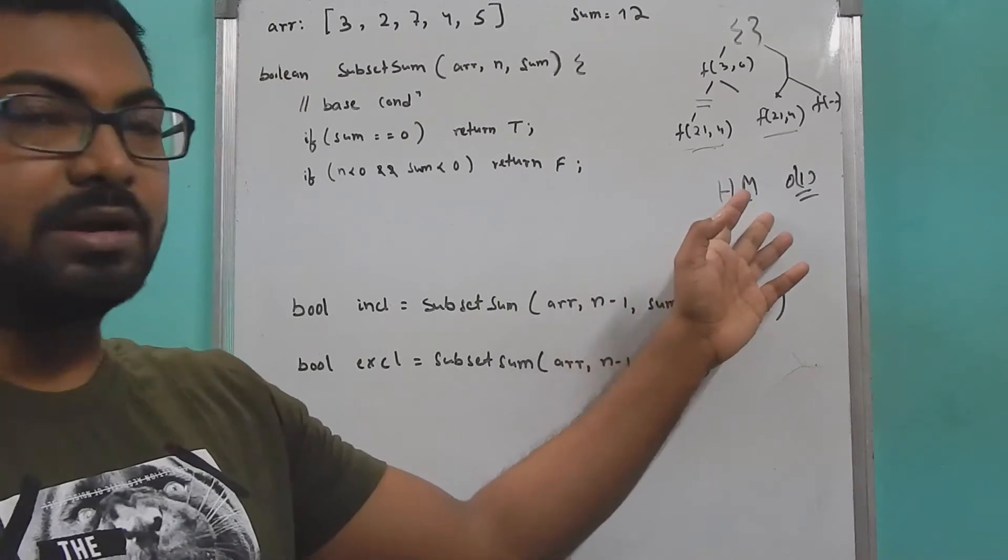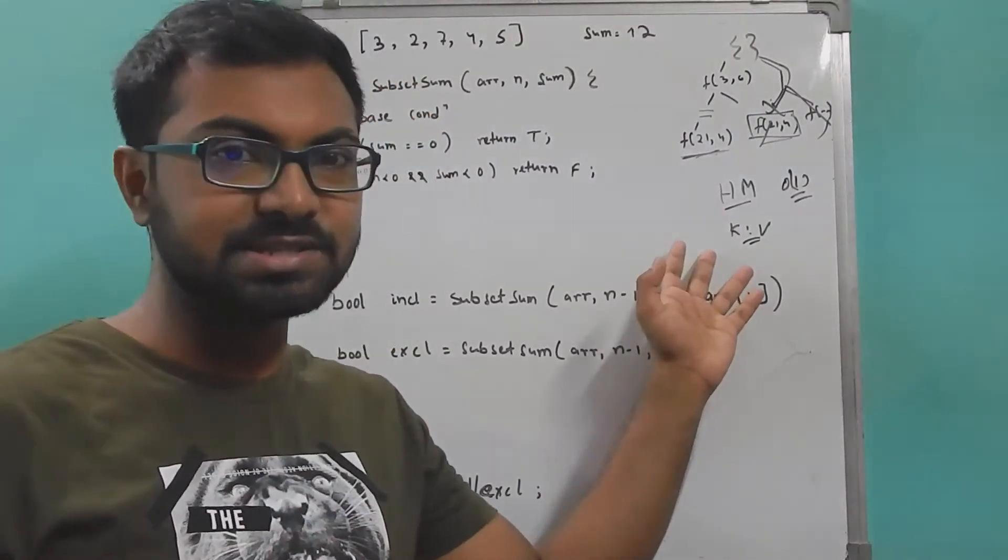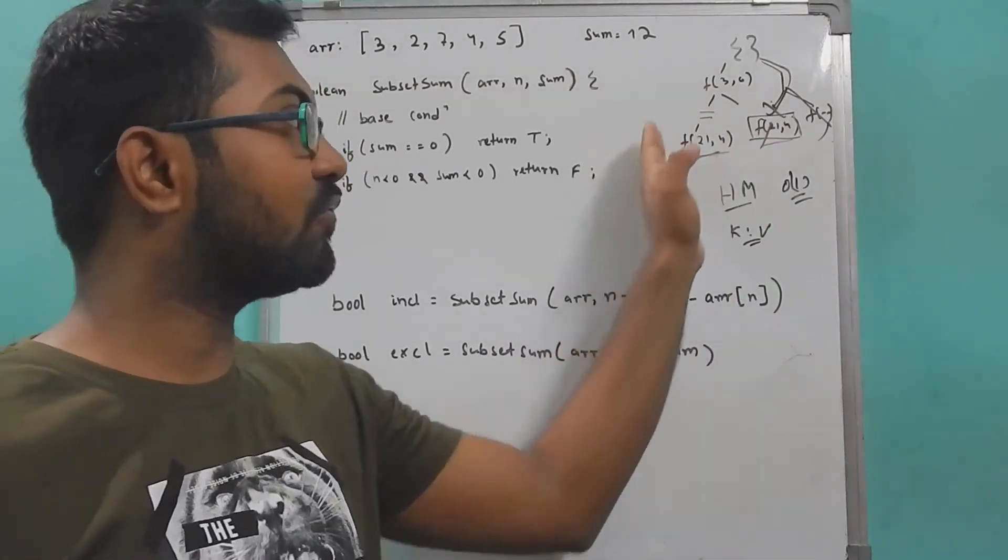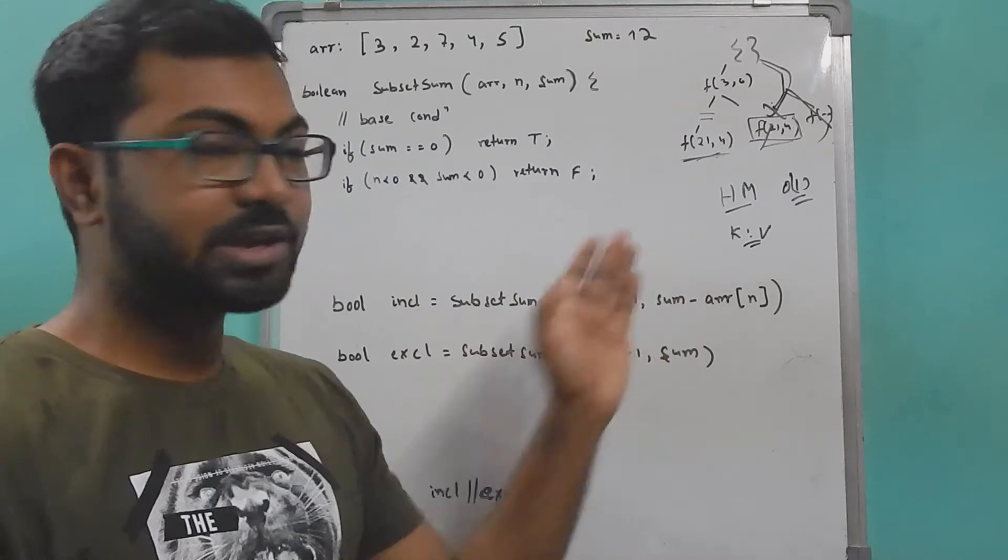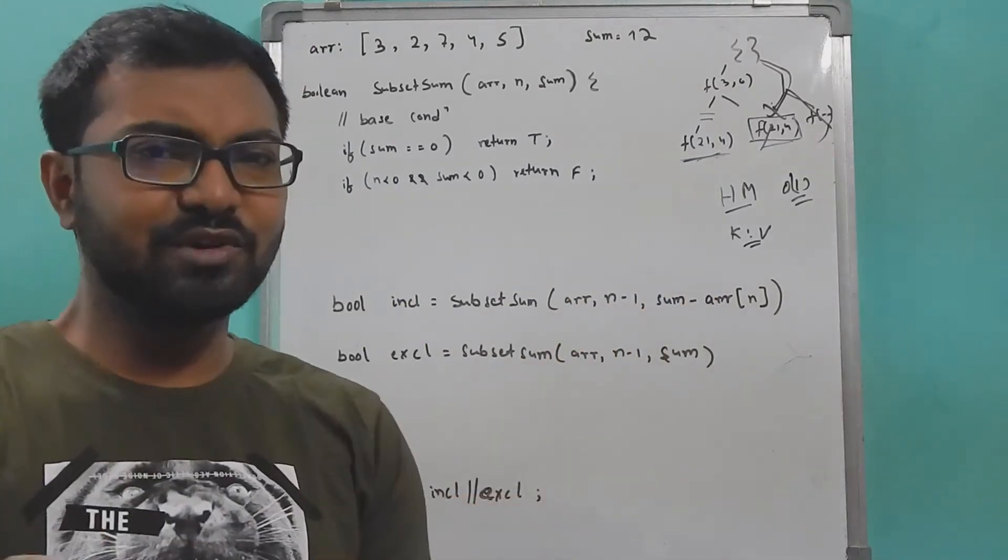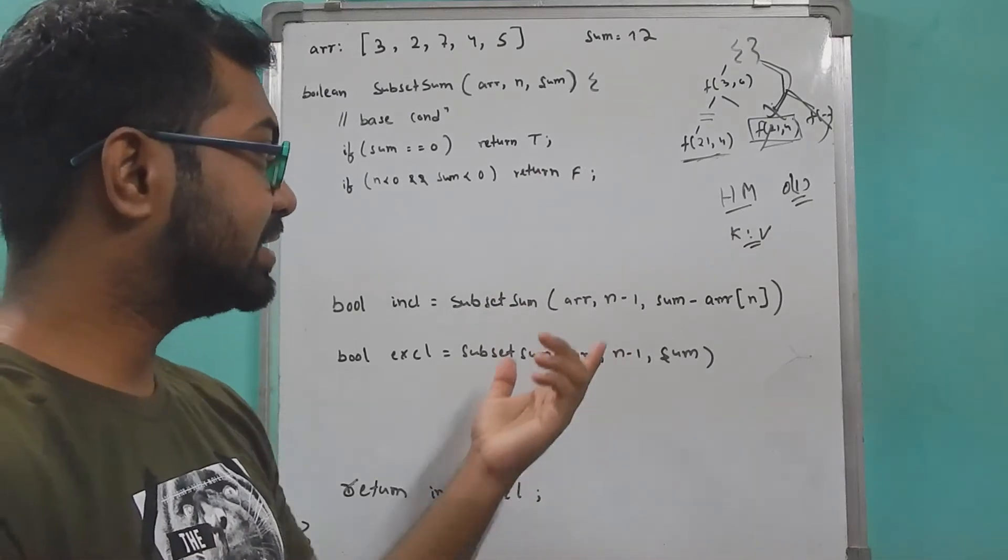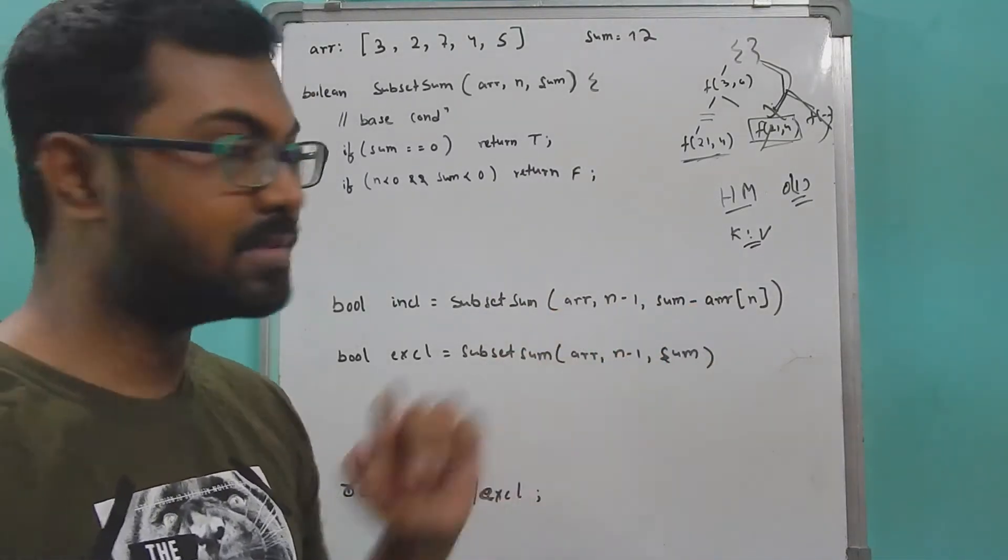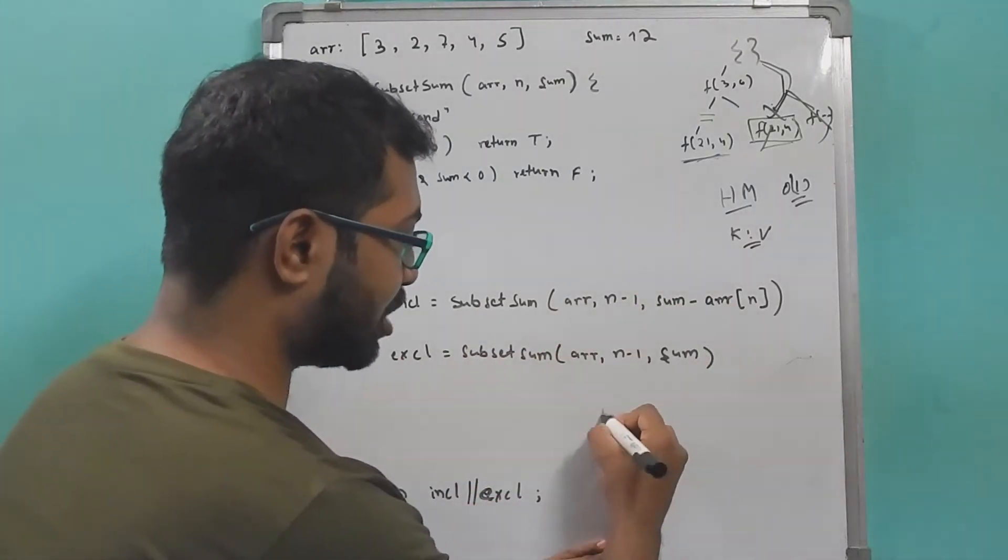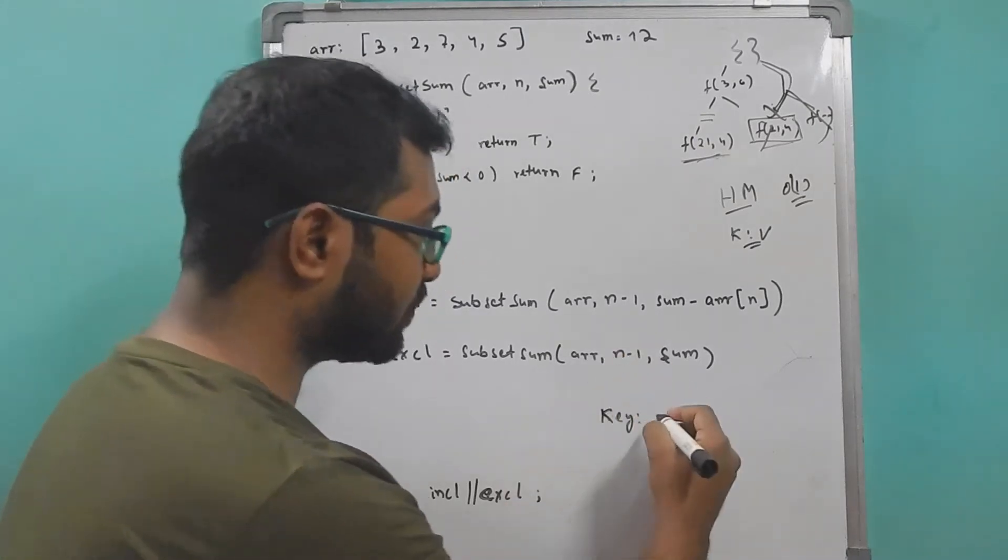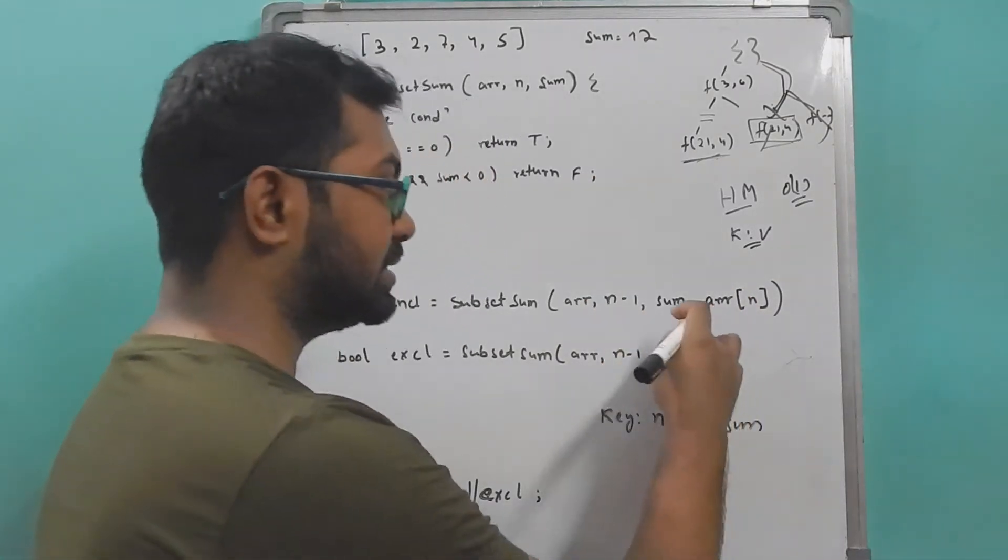If we need a hash map, what could be the key and value for it? The values of course will be the output - true or false - which we'll find in the subproblems. What will be the key? Think for a while, pause this video and come back. We can see at every step that two things are changing: one is the index and one is the sum. At every step or every subproblem we have to form something made up of these two values.